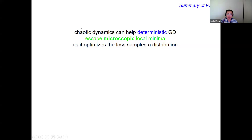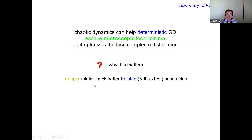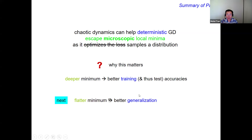To summarize part one: deterministic gradient descent can actually escape small-scale local minima if your learning rate is large. That's because the dynamics becomes chaotic, and the iterations will be sampling from a statistical distribution rather than optimizing the loss. This implicit bias matters because deeper minimizers have exponentially bigger probabilities to be encountered, which gives you better training accuracy. Of course, good training accuracy can give you good test accuracy, but that's not really a result about test accuracy directly.